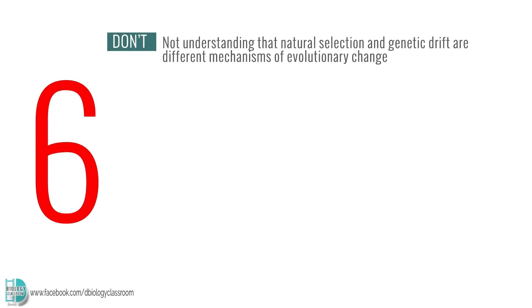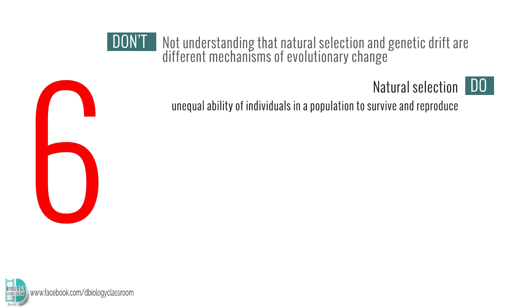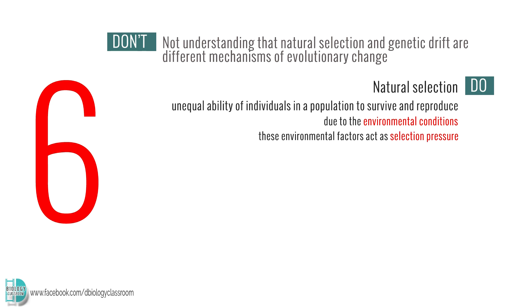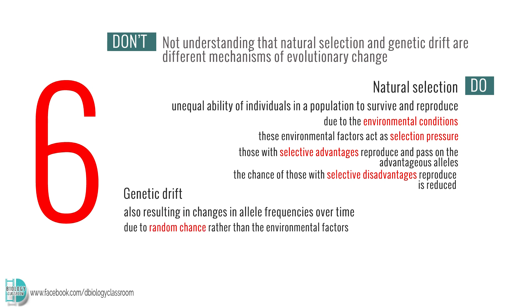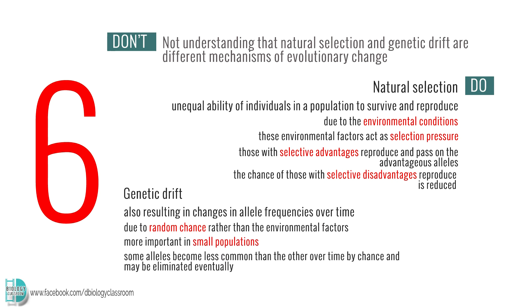Number 6: Not understanding that natural selection and genetic drift are different mechanisms of evolutionary change. Natural selection occurs when there is an unequal ability of individuals in a population to survive and reproduce due to environmental conditions. These environmental factors act as selection pressure, causing those with selective advantages to reproduce and pass on the advantageous alleles, while the chance of those with selective disadvantages reproducing is reduced. Genetic drift also results in changes in allele frequencies over time. However, it is due to random chance rather than environmental factors. It is more important in small populations, where some alleles become less common than others over time by chance and may be eliminated eventually.